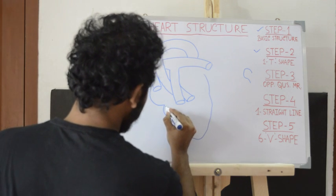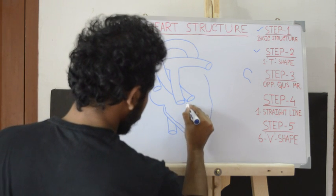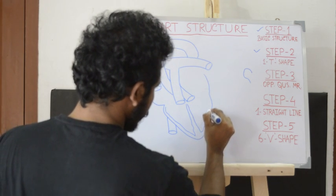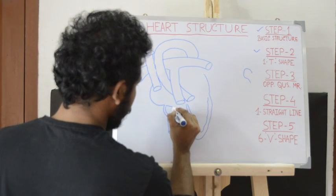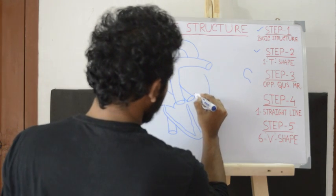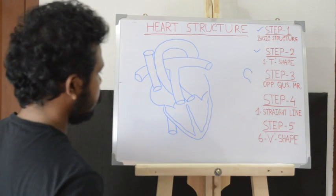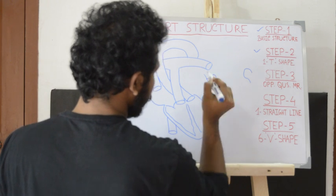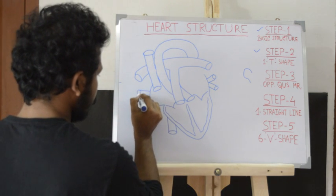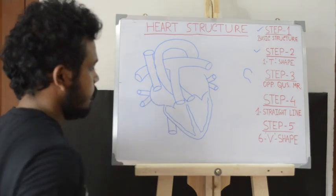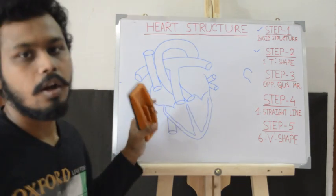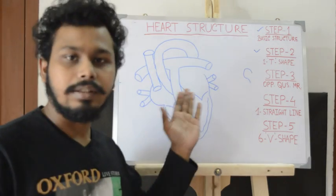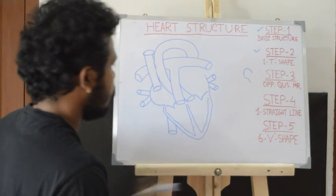This is the first V, this is the second, this is the third, this is the fourth, this is the fifth, and this is the sixth. This is the whole structure of the heart. Now I will show you how to label this heart structure.